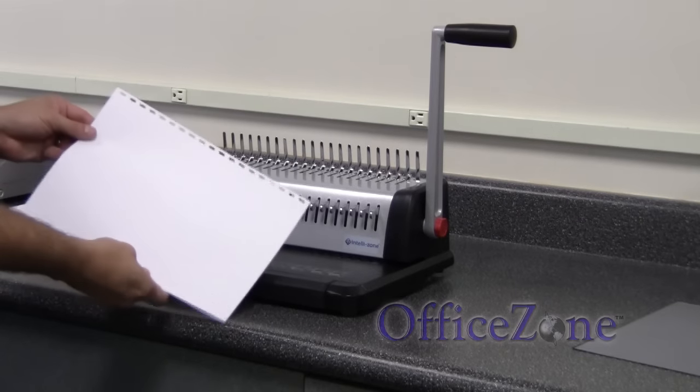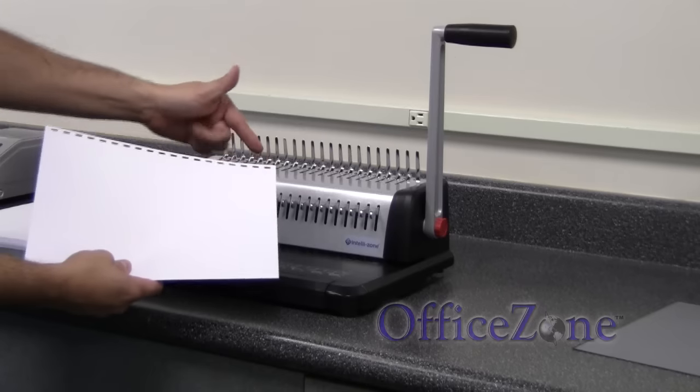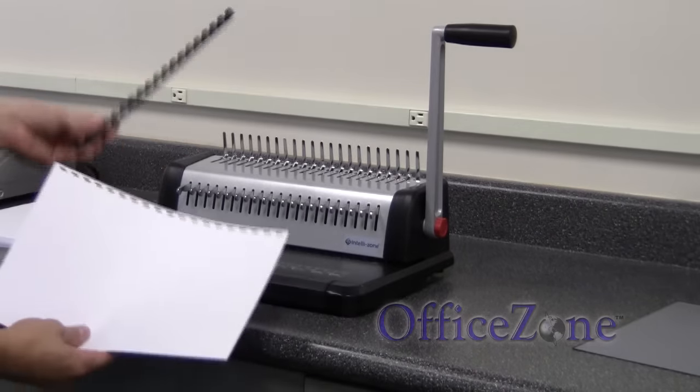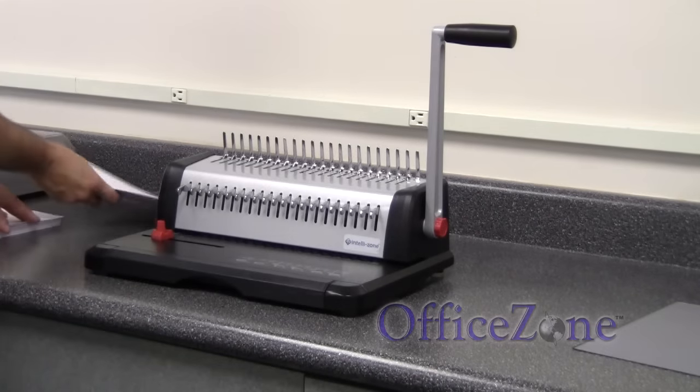This is a 19-ring plastic comb binding machine, which means along the 11-inch side of a sheet of paper there are going to be 19 holes, which actually coincides with a 19-ring comb binding supply. So I'm going to punch a few more sheets.